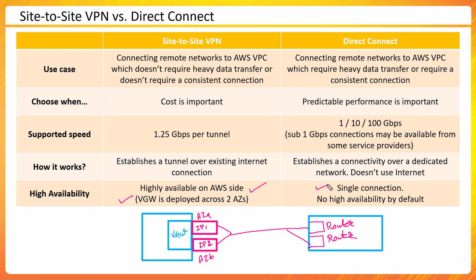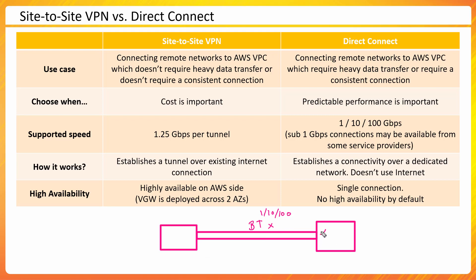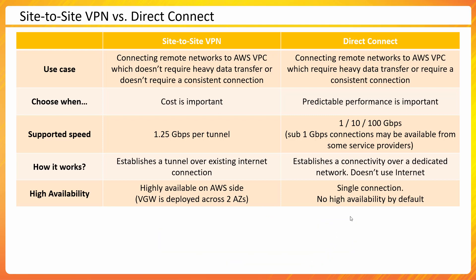Direct Connect, on the other hand, is a single connection. Even though it may be 1, 10, or 100 Gbps in speed, it is one single channel. If the service provider has issues or your cable has issues, your connectivity would be lost. What you can do is augment it with a site-to-site VPN as a backup or standby — use VPN only as standby and leverage the main Direct Connect for all regular traffic. But by default, Direct Connect is a single connection with no built-in high availability.